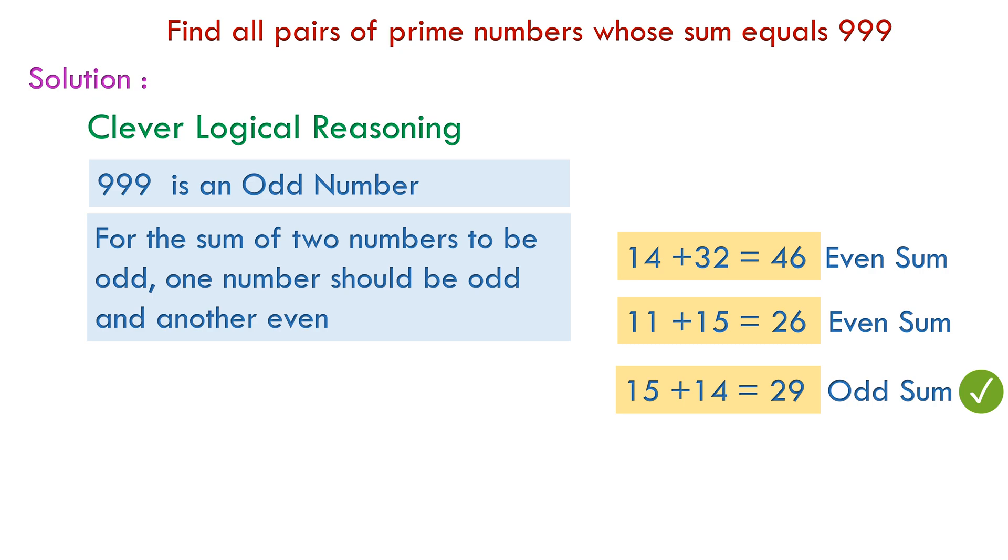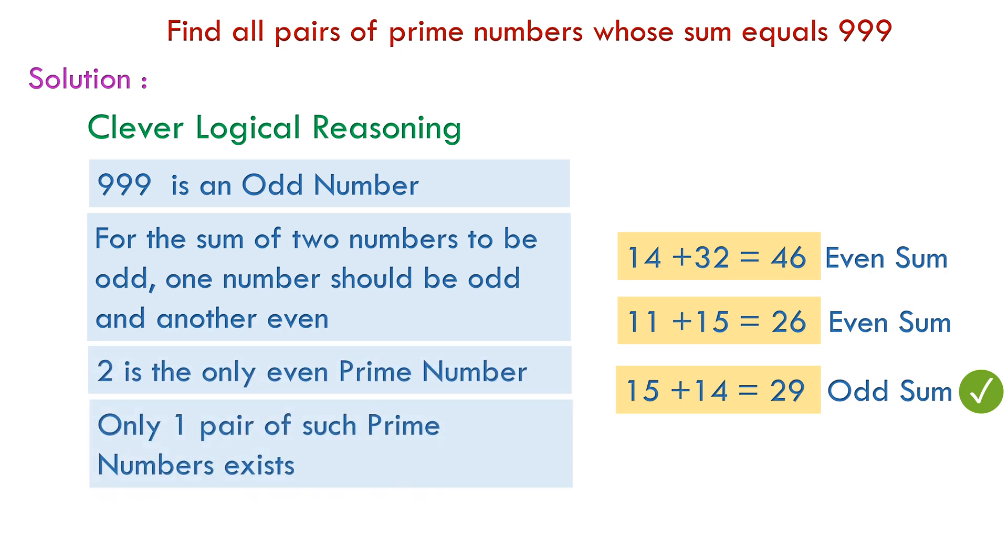Now, the question says two prime numbers. We know that the only even prime number is 2. So there can be only one pair of such prime numbers.